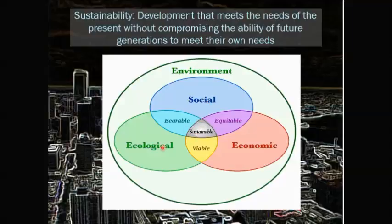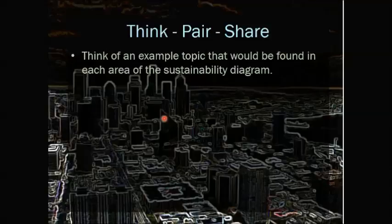You'll notice social, ecological, and economic are the large-scale circles. Then bearable, equitable, and viable also have to be aligned. If all these things do align, that's when we reach sustainability — the ability to use a resource and not use it up, but use it in a responsible way. Please draw this into your notebooks so that when we ask you to get the sustainability diagram out, you have it without technology.